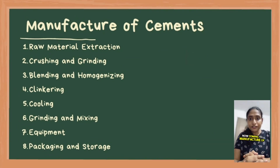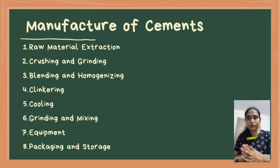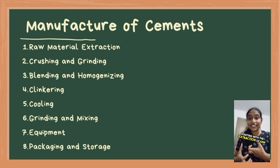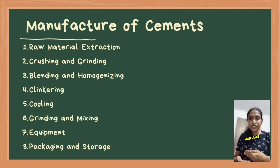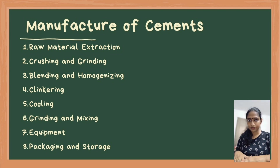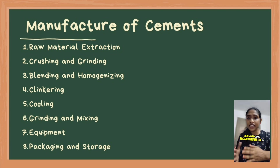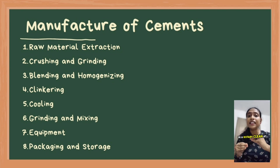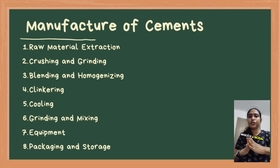Now, coming to the manufacture of cement, the manufacturing process involves several key steps starting with the extraction of raw materials like limestone and clay. These materials are then crushed and ground into a fine powder. The powdered materials are blended and homogenized in precise proportions before being heated in a rotary kiln at high temperatures to form clinker, which is a nodular material composed of calcium silicates and other compounds.